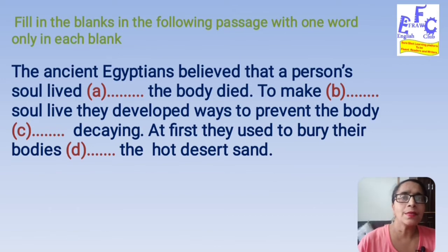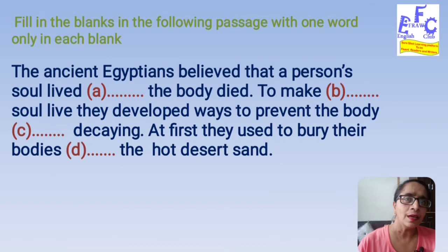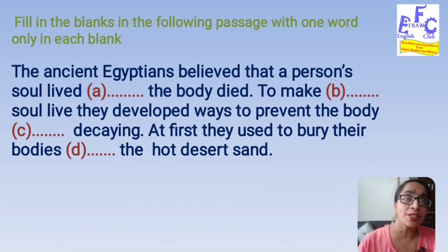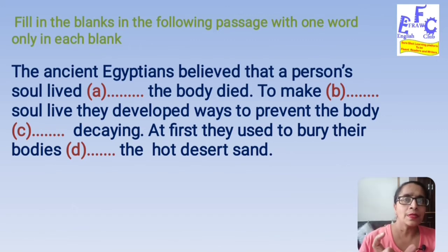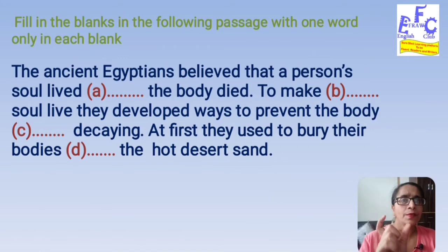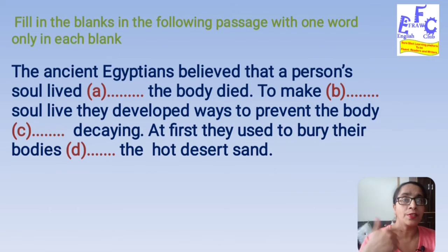So this passage is about ancient Egyptians and how they used to bury the dead bodies. What were their beliefs? The ancient Egyptians believed that a person's soul lived — the body died. We need to establish a relationship between the soul of a person and the death of the body — the living of the soul and the death of the body was a belief of Egyptians.